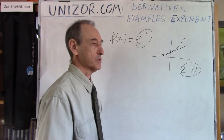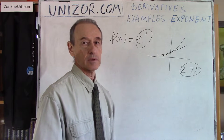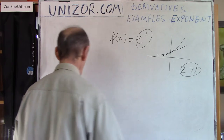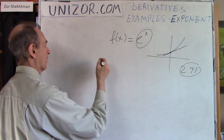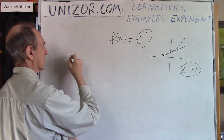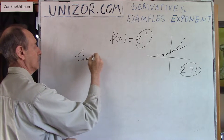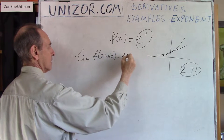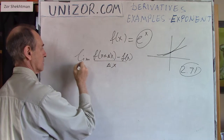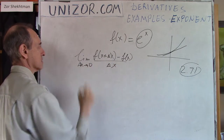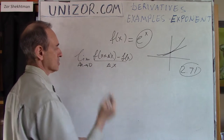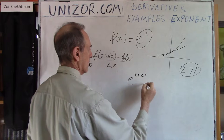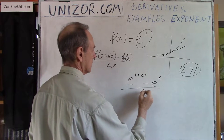Let's talk about how we can calculate the value of the derivative of this function. As you remember, the definition of the derivative is the limit of f(x + Δx) minus f(x) divided by Δx, as Δx tends to 0. Our f(x) is e to the power of x, so we are talking about e to the power of (x + Δx) minus e to the power of x, divided by Δx.